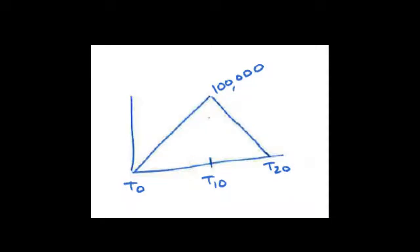That will keep going and keep growing until we get to this point where for tax purposes at time 10, you've already had all the deductions happen, so you've had all $200,000 as a tax deduction, but you've only had $100,000 of the depreciation expense. So the carrying value at time 10 of the asset is $100,000, and you can see zero to $100,000 — that temporary difference is $100,000.